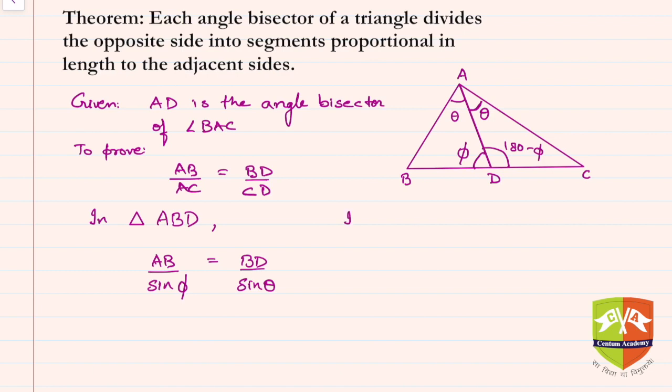Now in triangle—let's say ADC—so we get AC upon sin of 180 degrees minus phi is equal to CD upon sin theta.